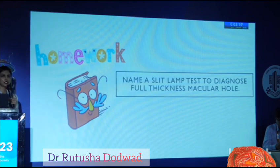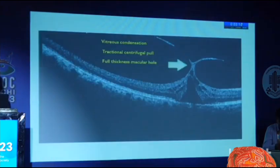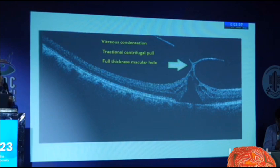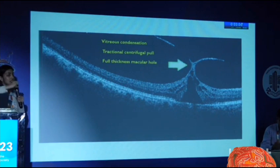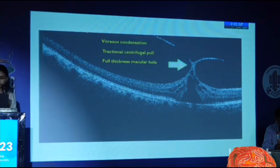That's a good question. I want you to go back home and read up on this and tell me the answer tomorrow. This is a very nice diagram depicting exactly why and how a macular hole is caused. First there is vitreous condensation above the macula, then vitreous traction and centrifugal pull, which leads to gaping of the retinal layers and loss of the retinal layers at the macula.